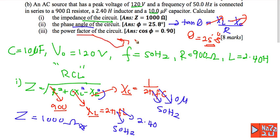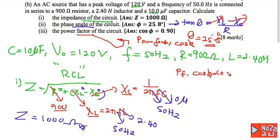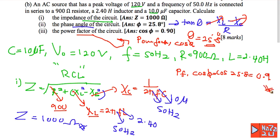Number three: power factor. Power factor equals cosine theta. Using the phase angle from answer number two, which is 25.8 degrees, the power factor equals 0.9. That's all, thank you.